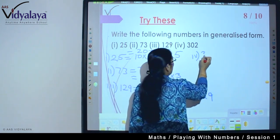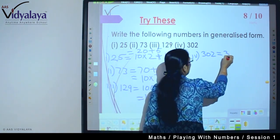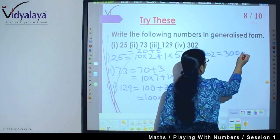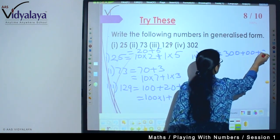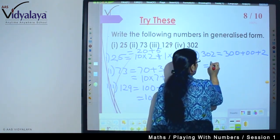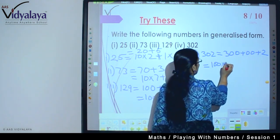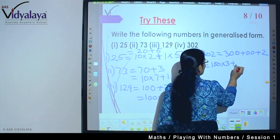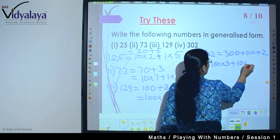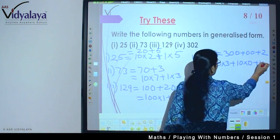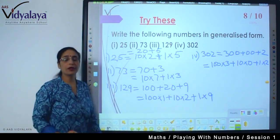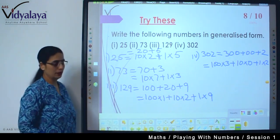In this what came? Zero came. There is nothing to fear. We write 300 plus 0 plus 2. This means it becomes 100 into 3 plus 10 into 0 plus 1 into 2. If there is zero, no problem.